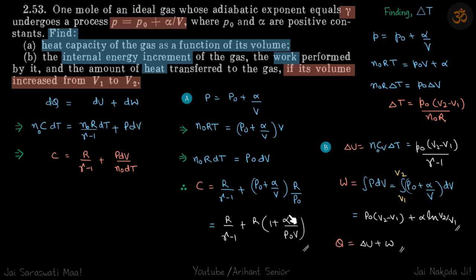The only way to calculate heat is to add ΔU and the work done by the gas: Q = ΔU + W. Once again, we cannot directly write Q = n₀·C·ΔT because C is variable, but we can obtain the answer this way.